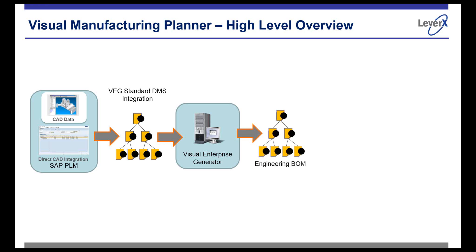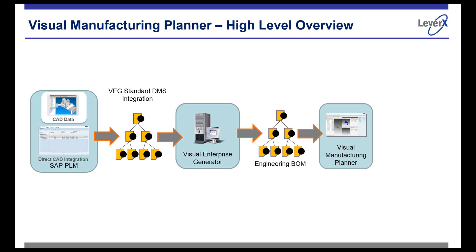So in this next part of the flow: you've taken the CAD information and using ECTR, you create the document structure — a document-based bill of materials on the left. After Visual Enterprise creation, you can then create the material masters in SAP and your engineering bill of material in SAP within the Engineering Control Center. The next part is: okay, now that you have this engineering bill of material, let's plan it.